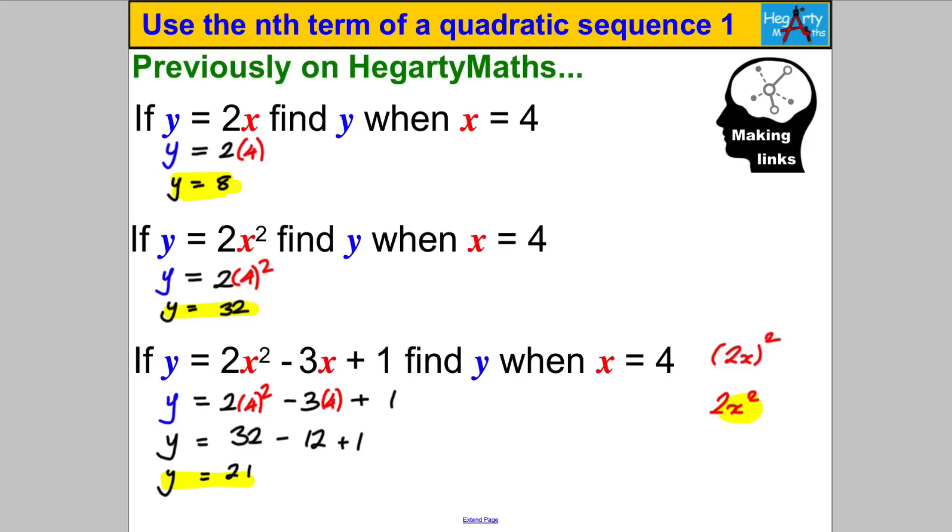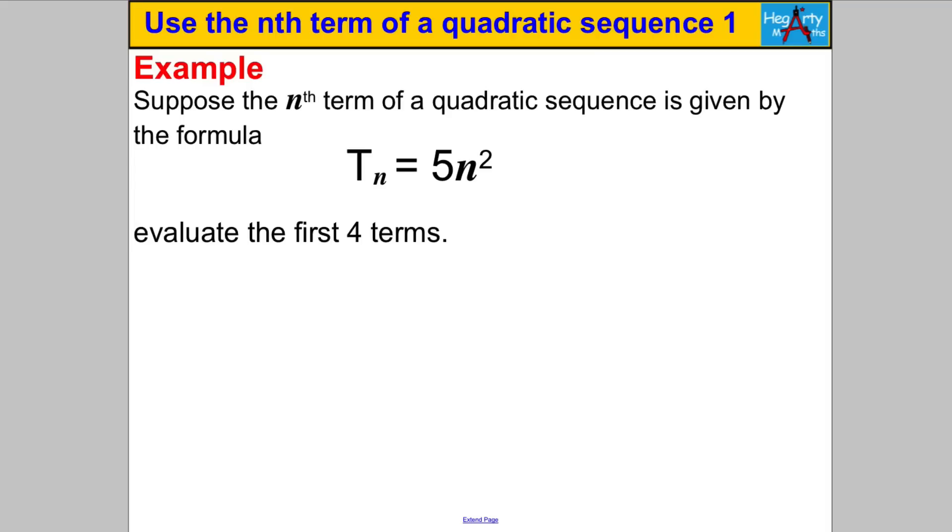Let's get on to doing some actual questions about quadratic sequences and using the nth term. Here's an example if you feel like you can do it pause the video and have a go. Well we're actually given the nth term of this quadratic sequence we're told that the nth term T_n is 5n squared and it says evaluate the first four terms. Nice and easy we just make n be 1, work out T_1 that's 5 times 1 squared, 1 squared is 1 times 5 is 5 so T_1 is equal to 5.